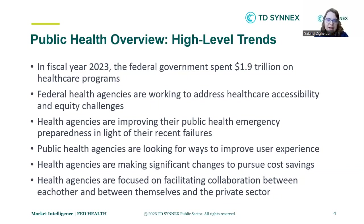We shall start by looking at an overview of public health. Healthcare is a major component of federal spending. In fact, in fiscal year 2023, it accounted for $1.9 trillion, or about 29% of federal spending. On a high level, key objectives of federal healthcare agencies include increasing healthcare accessibility and equity, improving user experience, improving collaboration and interoperability between different public healthcare agencies and between healthcare agencies and their public sector partners, and improving public health emergency preparedness and response.